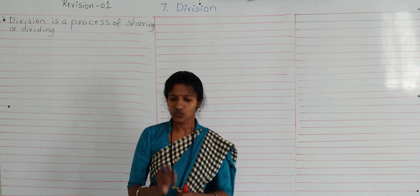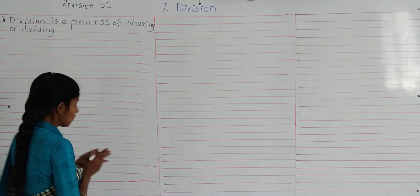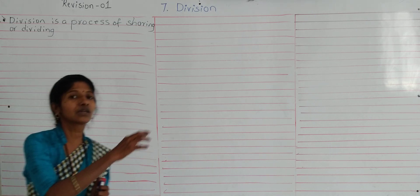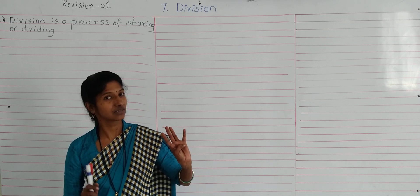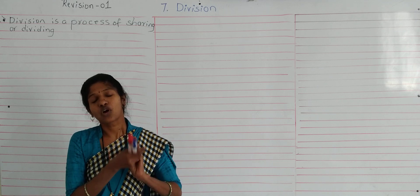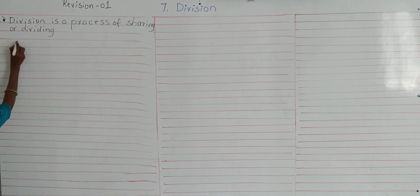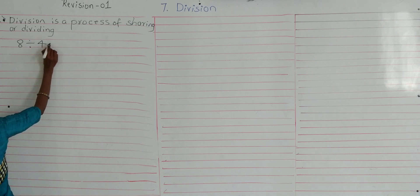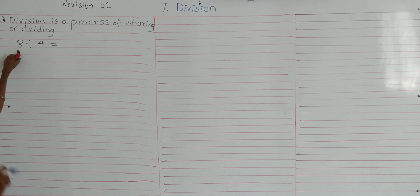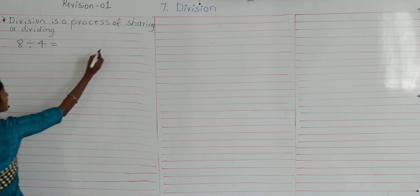For example, think that you are having 8 toffees with you. So you want to share those toffees among your friends. You have 4 friends and the number of toffees is 8. So how many toffees will each friend get? You have to find that.